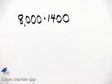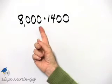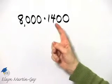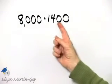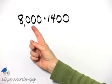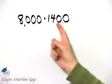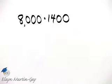Let's multiply 8,000 and 1,400. Notice this is a four-digit whole number, and this is also a four-digit whole number. This one has no comma, and this one does have a comma. A comma can be inserted or may not be inserted when your whole number has four digits, so both of these notations are okay.